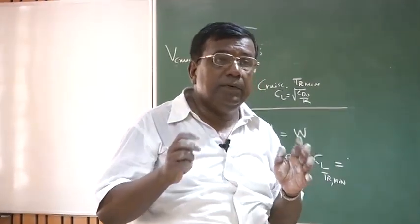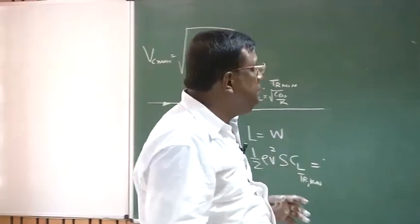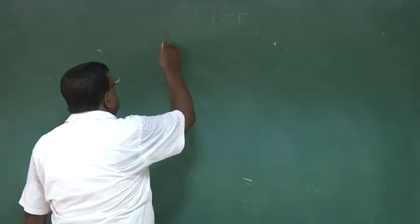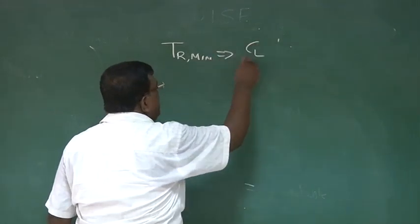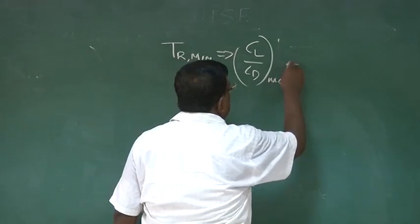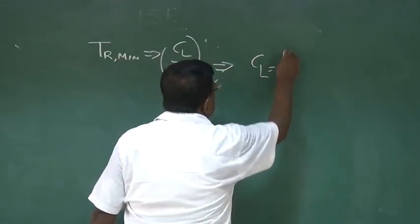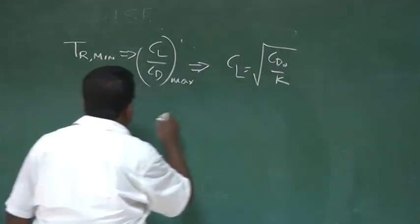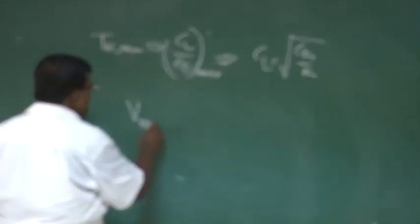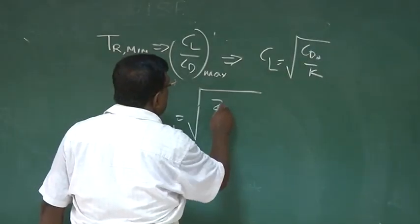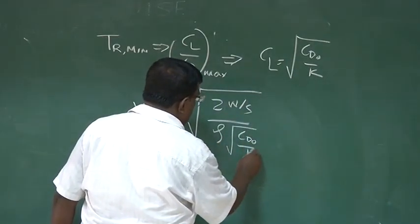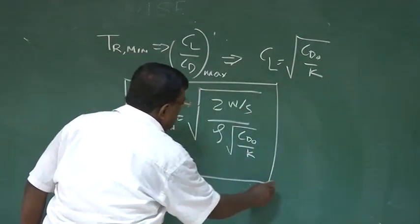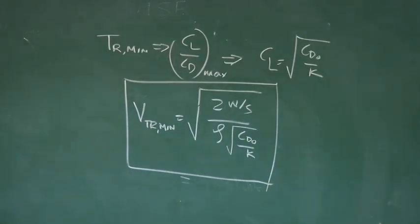For thrust required minimum, I must fly at CL/CD maximum, which means flying at CL = √(CD0/K). That means the velocity for thrust required minimum is V = √(2W/S divided by ρ·√(CD0/K)). This is the velocity for thrust required minimum that should be maintained by the pilot at a given altitude. Please understand also that this value will change depending on the altitude — as I go higher and higher, the value of rho decreases, so this velocity will increase.